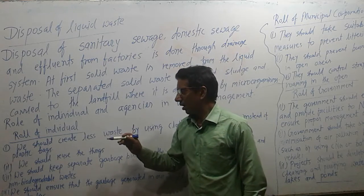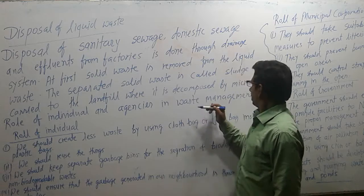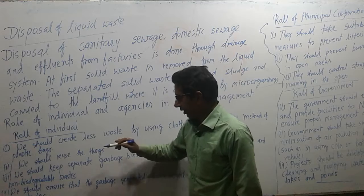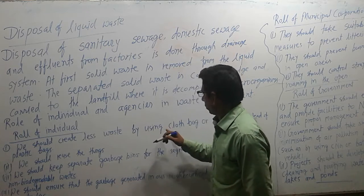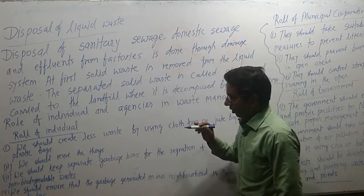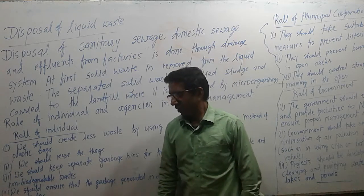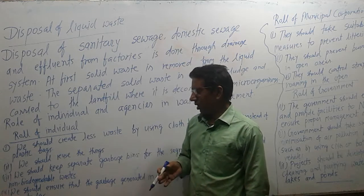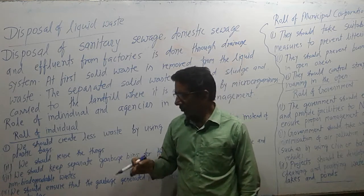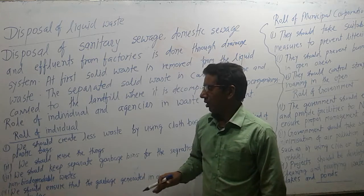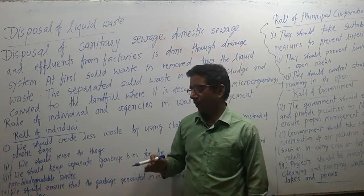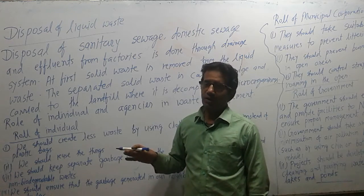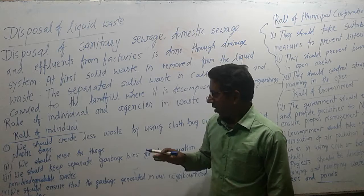Now we have to know the role of the individual and agency in waste management. The role of the individual: we should create less waste by using cloth bags or jute bags instead of plastic bags. People currently use plastic or polythene bags, but these bags are very harmful to the environment. So, instead of plastic or polythene bags, we should use only paper bags, jute bags, or cloth bags.